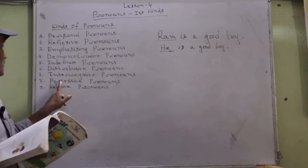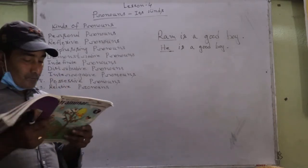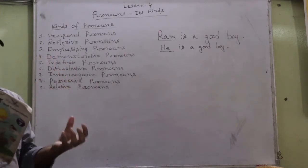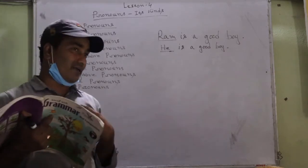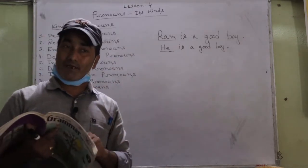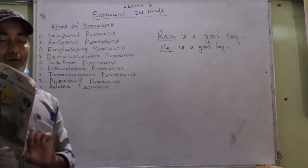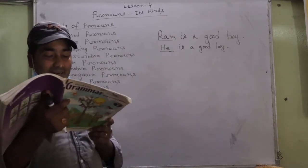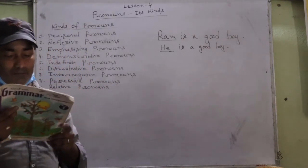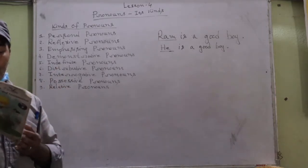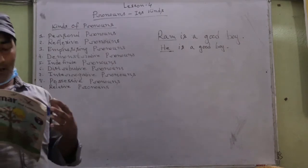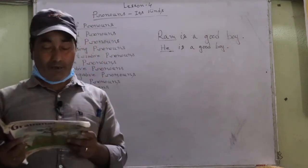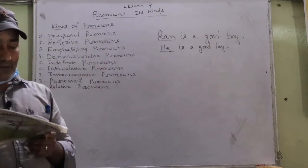Next comes possessive pronouns. Possessive pronouns are used to show possession — meaning that something belongs to someone. For example, 'This jacket is mine' — 'mine' shows the jacket belongs to me. 'The computer is yours' — 'yours' means that computer belongs to you. So 'mine' and 'yours' are examples of possessive pronouns.